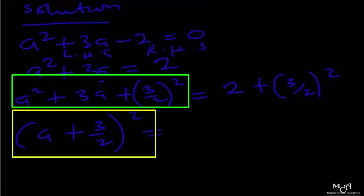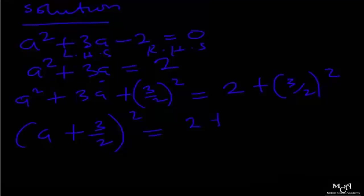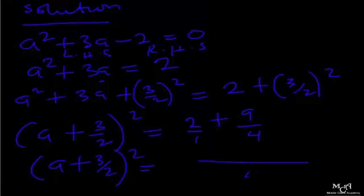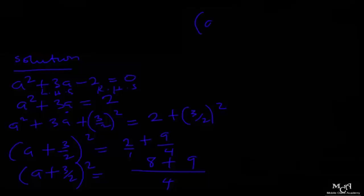If you expand that expression you get exactly what is there. Three squared gives us 9 and two squared gives us 4. Now we take the LCM. The LCM of 1 and 4 is 4: four times 2 is 8, and one times 9 is 9. So we have a plus three over two, all squared, equal to 8 plus 9, which is 17.